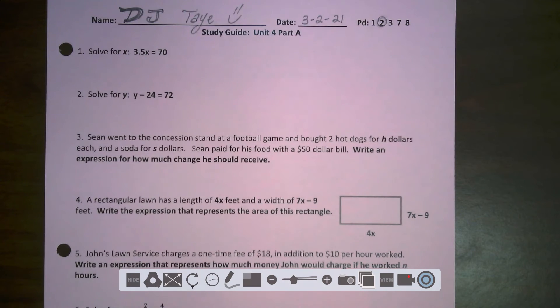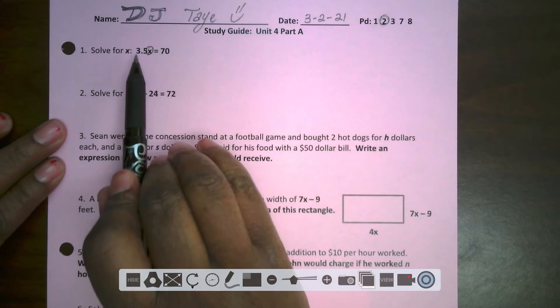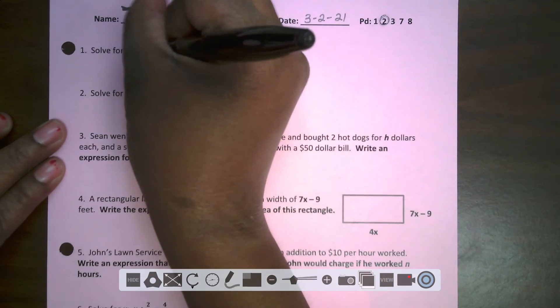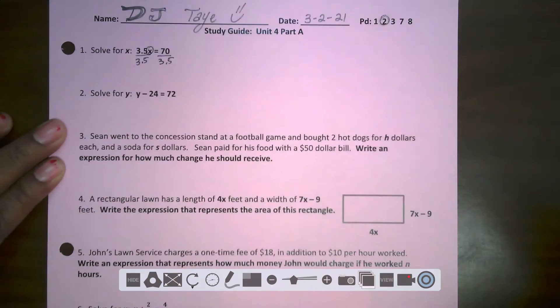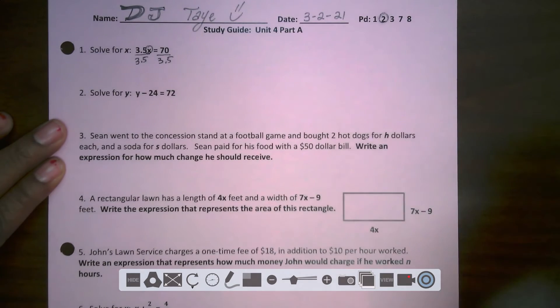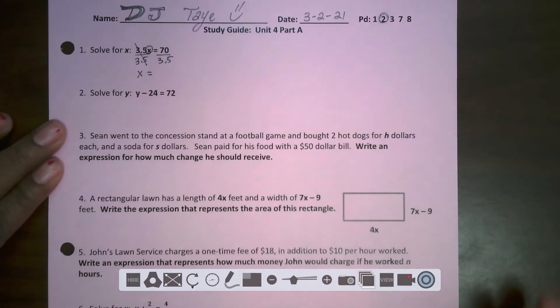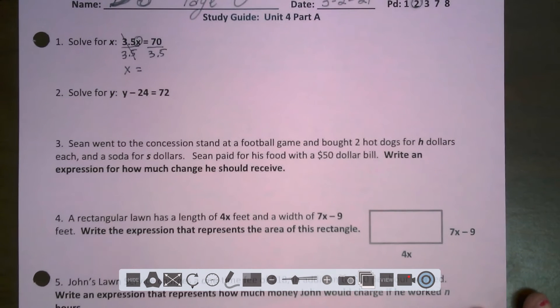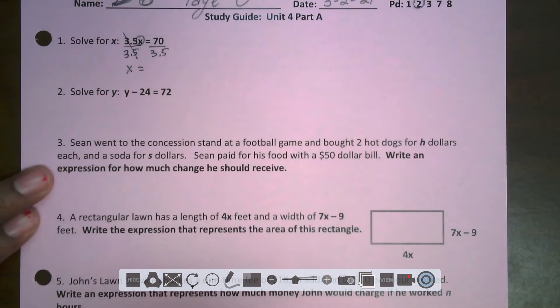Let's look at number one. It says solve for x: 3.5x equals 70. The first step, I'm going to circle my variable. What is being done to this variable? It's being multiplied by 3.5. So the inverse of that will be to divide each side by 3.5. These 3.5s cancel out, leaving me just with x on that side. Now I need to pop into a calculator, 70 divided by 3.5. When I do that on my calculator, I get 20.